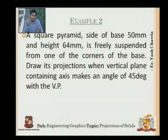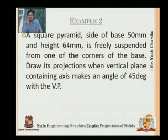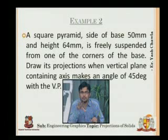A pyramid has a point at the top and a base at the bottom. If it is a square pyramid, the base will be a square. The side of the base is 50 mm, meaning the square has each side of 50 mm. The height of the pyramid is 64 mm. It is freely suspended from one of the corners of the base — not touching HP.